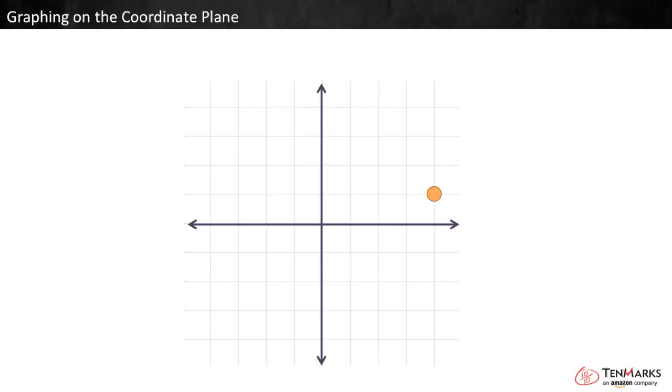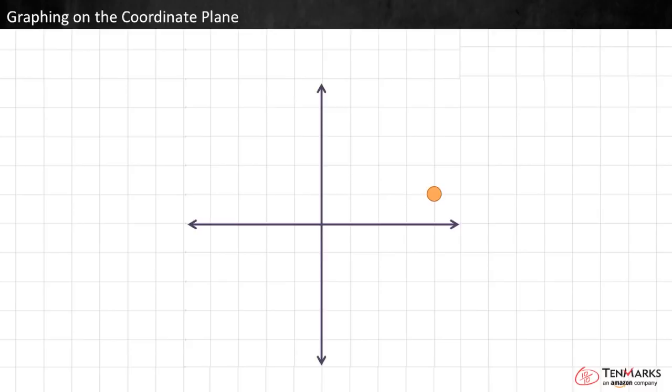Coordinate planes have some important parts with special names. The two lines are called the axes. The axes are lines, not line segments, because we need to show that the grid could keep going on forever in every direction, so they always have arrows at the ends.